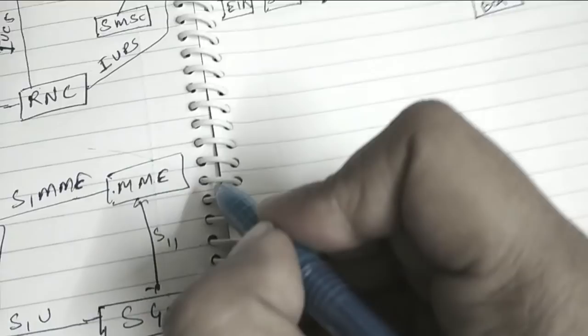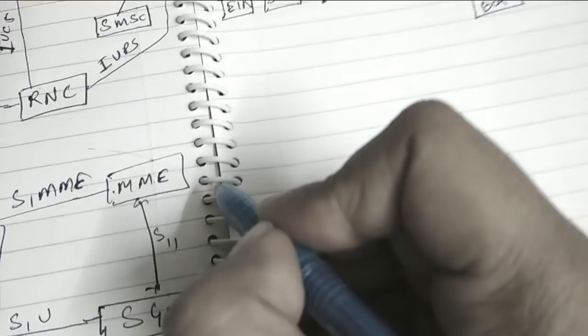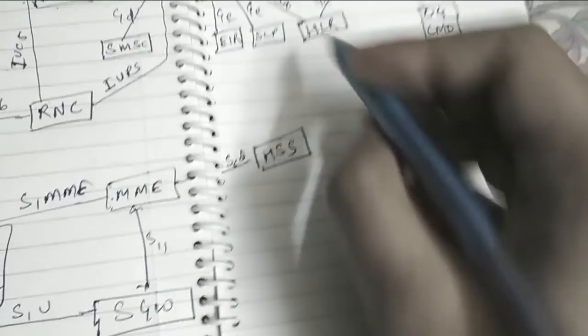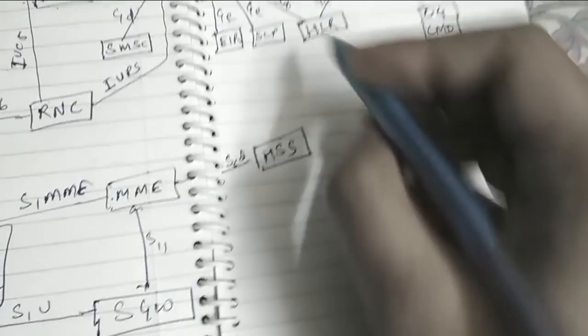Now this MME is connected to the nearest HSS, Home Subscriber Server, through S6D interface. And this HSS is connected to this SGSN by S6D interface. Which is useful for handover from 4G to 2G or 3G part, from 2G or 3G to 4G part.